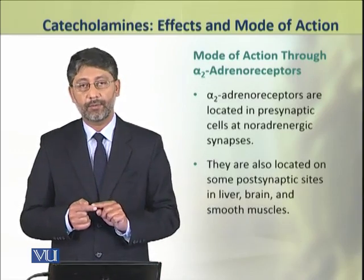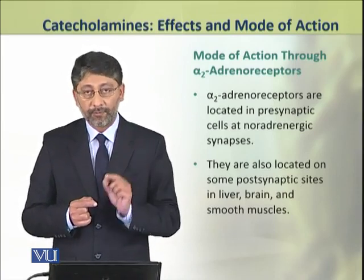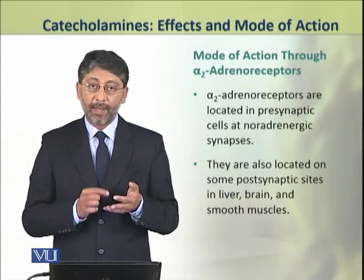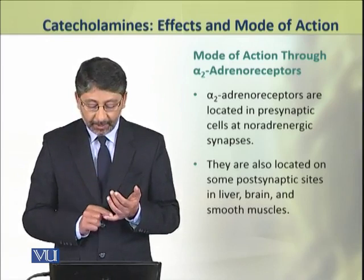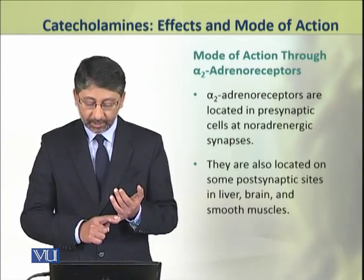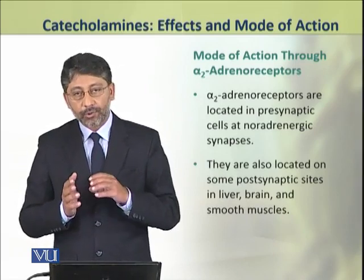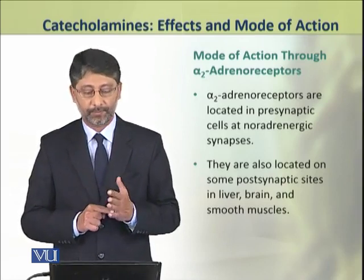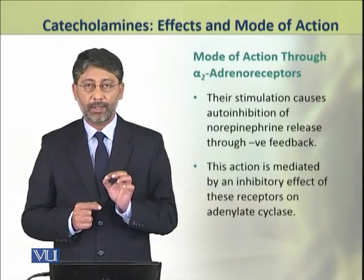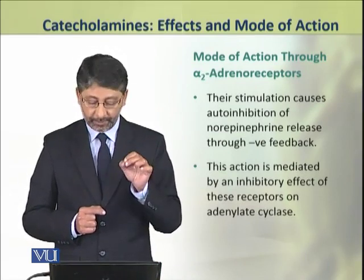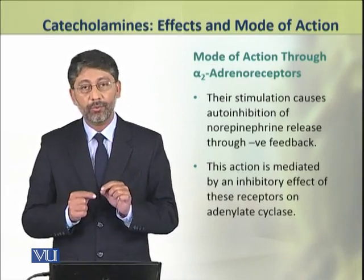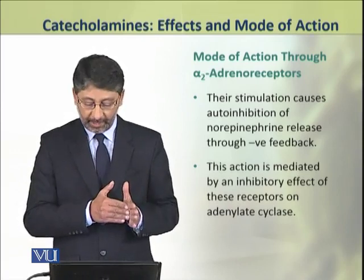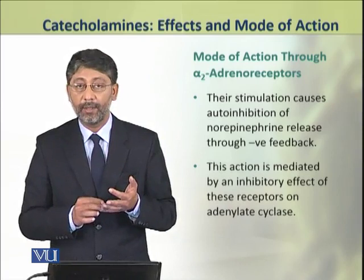Now we shall discuss the mechanism of action of catecholamines by binding through alpha-2 adrenoreceptors. These types of receptors are found in the pre-synaptic cells at noradrenergic synapses. They are also located on some post-synaptic sites in the liver, brain, and smooth muscles. Their stimulation causes auto-inhibition of release of norepinephrine through a negative feedback. This action is mediated by an inhibitory effect of these receptors on the enzyme adenylate cyclase.